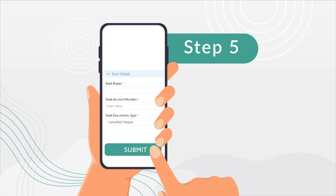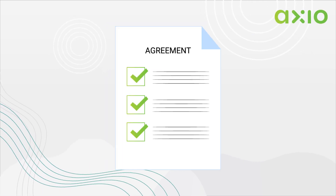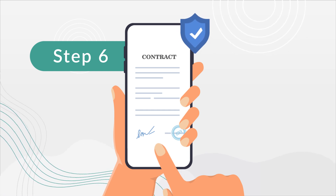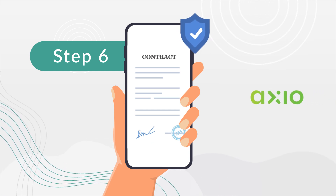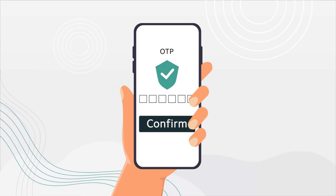Click the submit button. Now Axio will verify your details. On verification by Axio, you will receive an agreement with details on your registered mobile number and registered email ID within 48 hours.